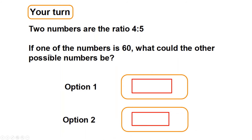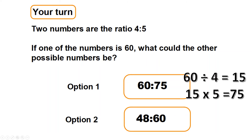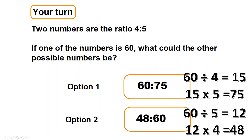Two numbers are in the ratio four to five — one of the numbers is 60. What do I need to times four by to get to 60? Then I times it by five — that gives me my first pair. What do I need to times five by to get to 60? Then I times it by four. Answer: 60 divided by four equals 15, so 15 times five equals 75 — giving 60 and 75. Then 60 divided by five is 12, and 12 times four equals 48 — giving 48 and 60.